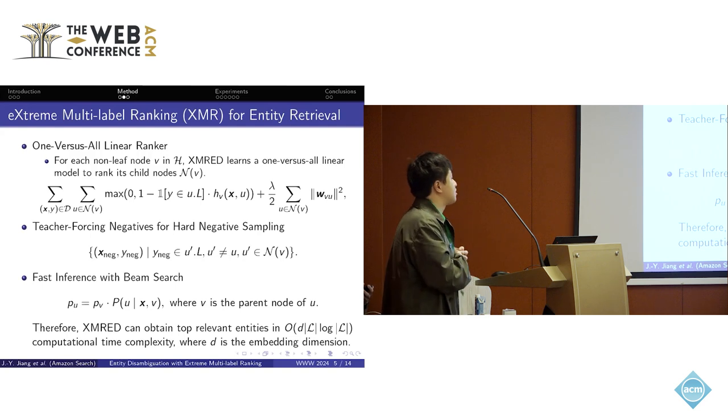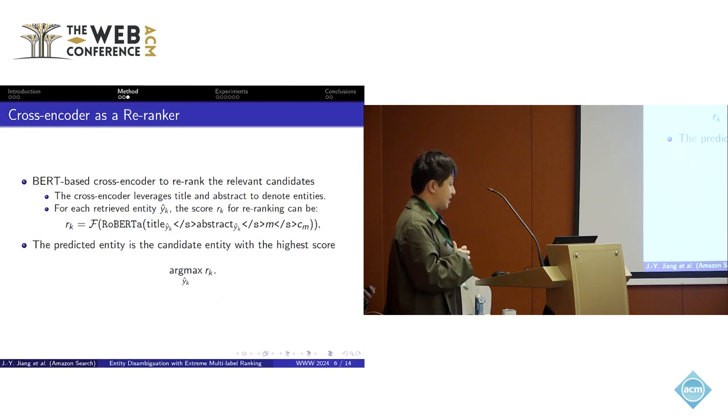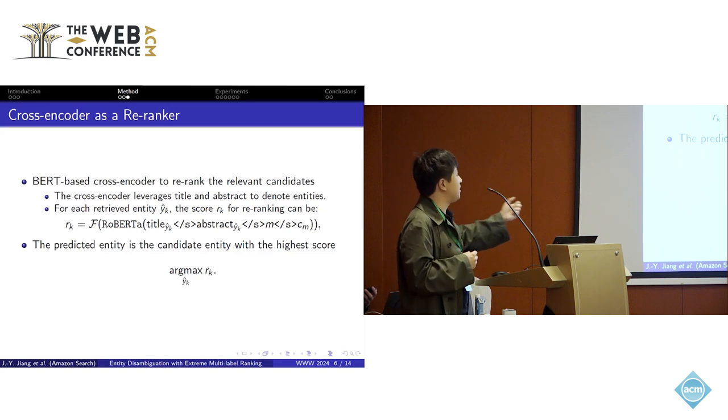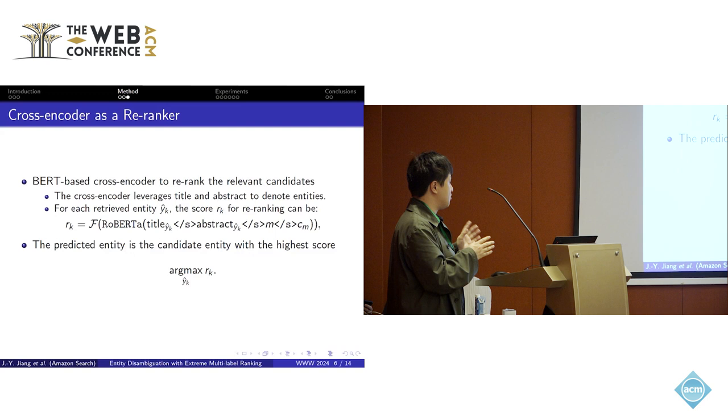Finally, we obtain the top relevant entities to be the candidates with affordable time-computational complexity. Based on those retrieved candidate entities, we apply the BERT-based cross-encoder to re-rank the relevant candidates. We leverage the title and the abstract of those entities in the knowledge base to denote the entities. For each retrieved entity, the scores of the re-ranking are computed, and finally we can select the predicted entity from the candidate entities with the highest scores. For the optimization details, please refer to our paper for more specifics.